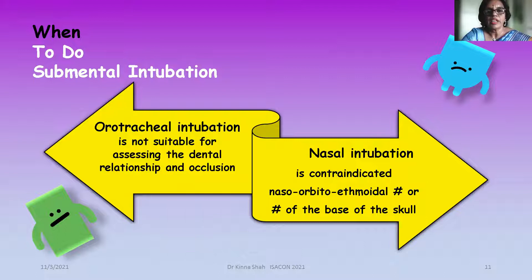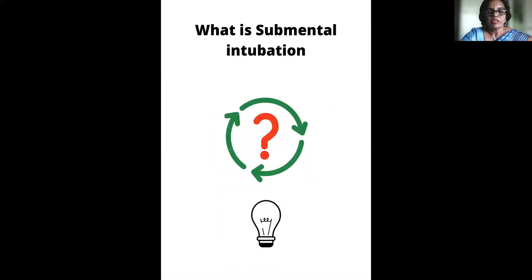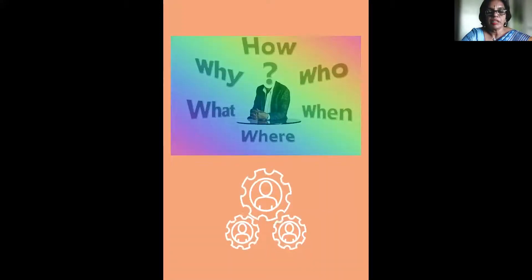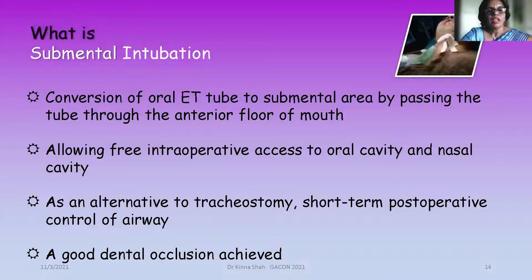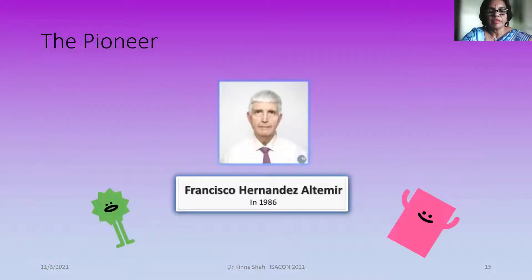The anesthetist is therefore in a dilemma about what type of airway management to use. In this presentation, I am exploring the submental intubation technique for such situations. In simple terms, it involves converting the oral endotracheal tube to the submental area by passing through a tunnel made through the floor of the mouth. It allows intraoperative access to the oral and nasal cavities as an alternative to tracheostomy for short-term postoperative airway control. The pioneer of this technique is Altemir in 1986, used for intermaxillary wiring to prevent tracheostomy.